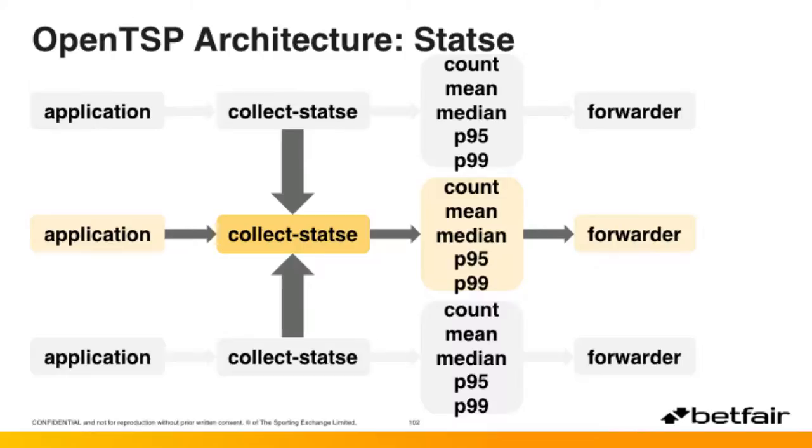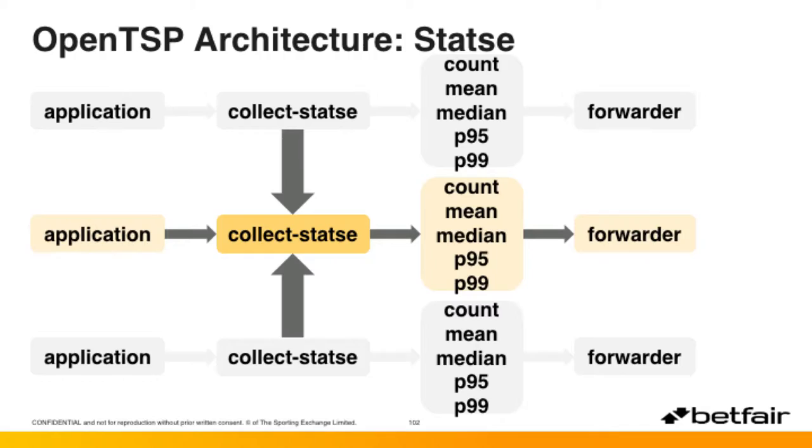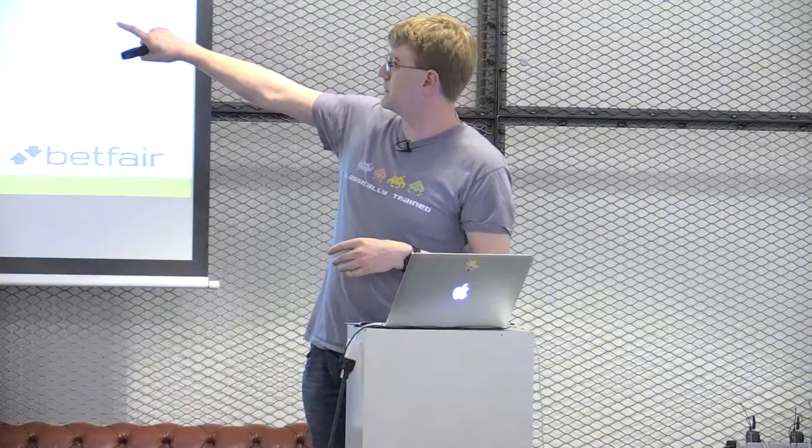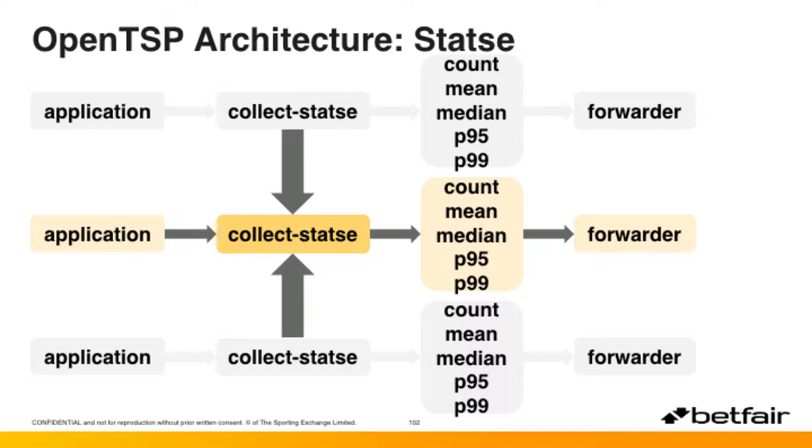We also have a new plugin — some of you may be familiar with StatsD from Etsy. Our version, collect-StatsY, converts event-based data like web access logs into time series data by aggregating it. Your application writes response times into collect-StatsY, which at configurable intervals computes basic stats and pushes them into the forwarder, ending up in OpenTSDB. That's mediated by ZeroMQ to prevent back pressure affecting the application. Across a cluster of machines, we can select one as the StatsY aggregator to collect all individual metrics before they hit the database.